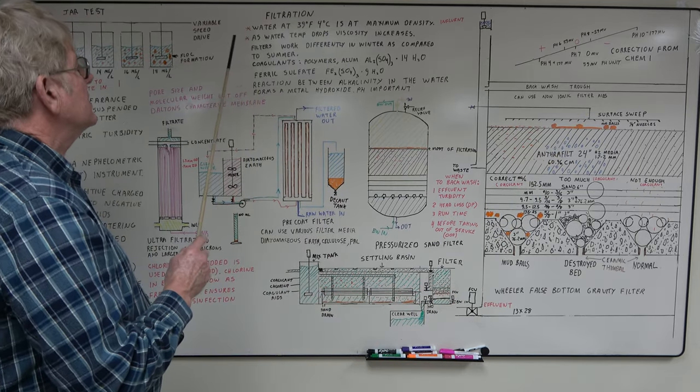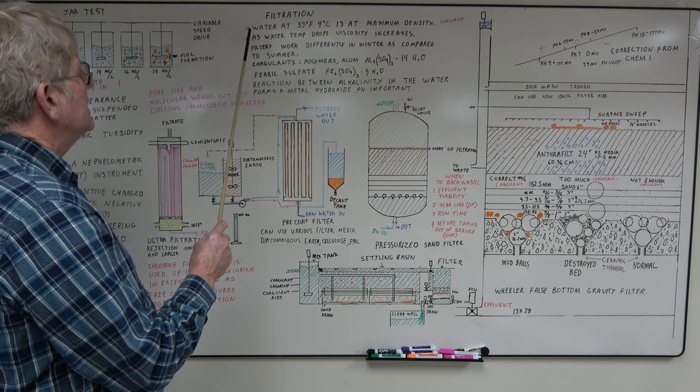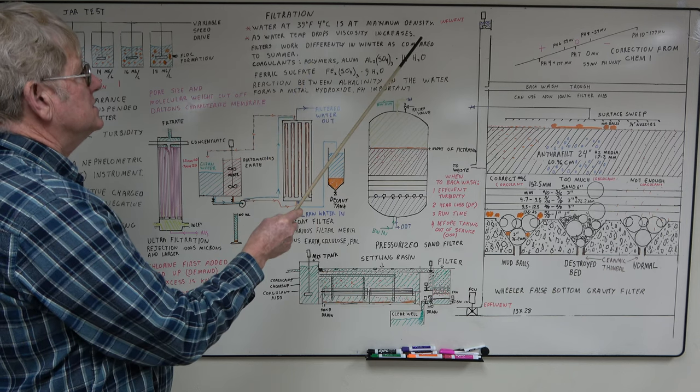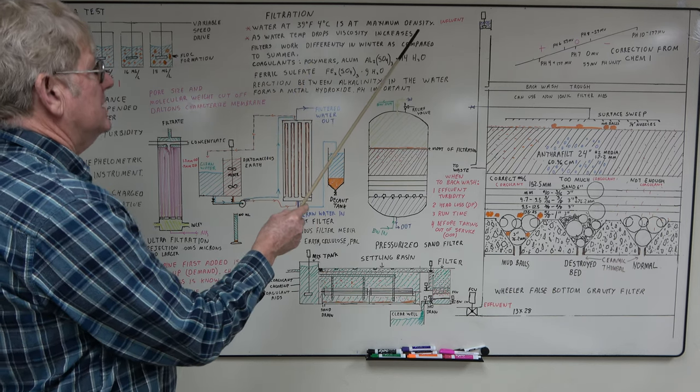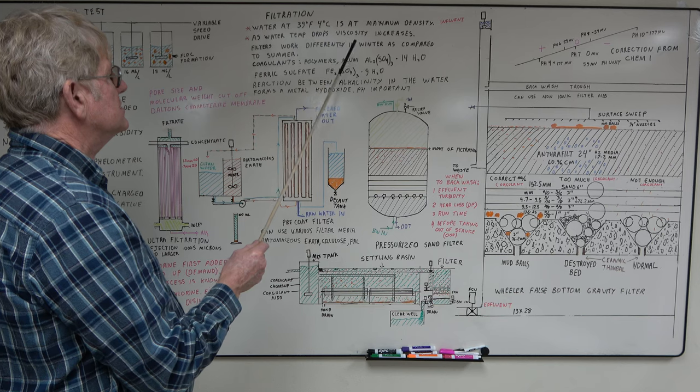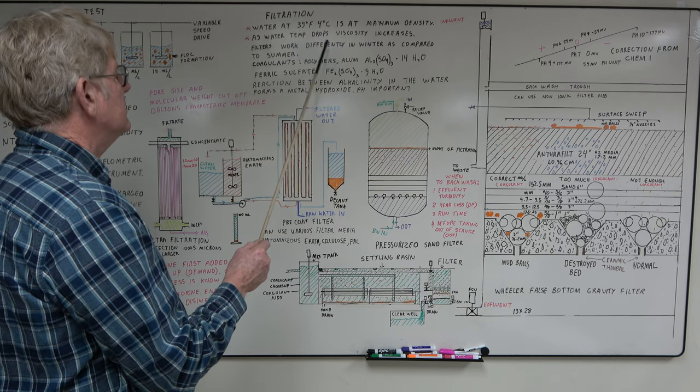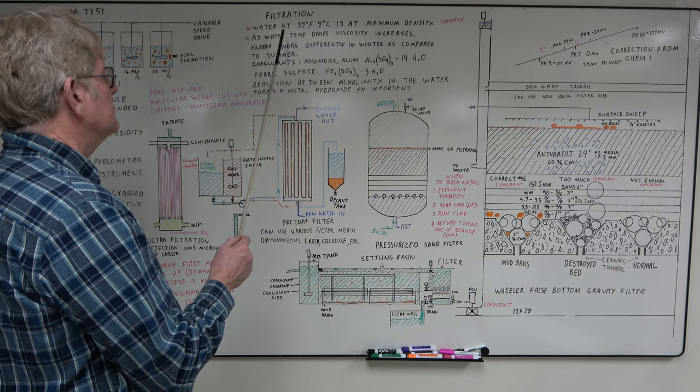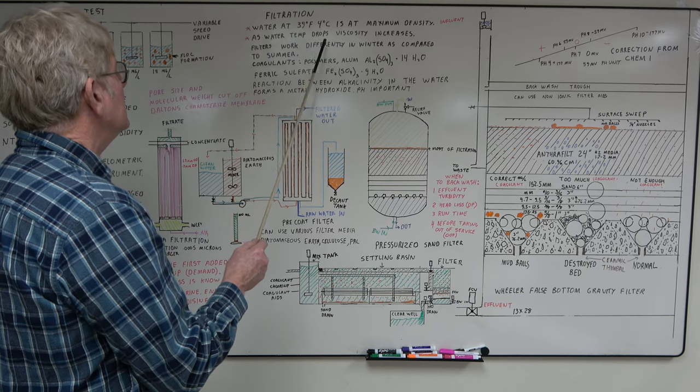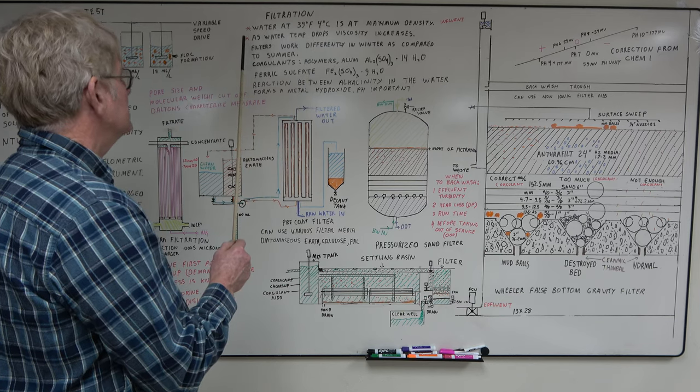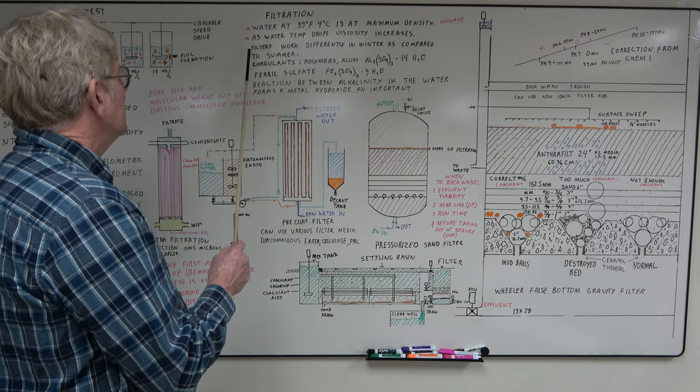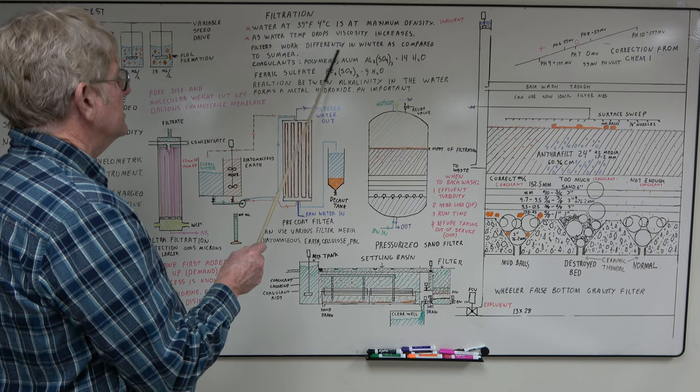Filtration. Big thing with water: at 39 degrees Fahrenheit, 4 degrees Celsius, has maximum density. This means as it gets colder it gets lighter, and as it gets warmer it gets lighter. As water temperature drops, viscosity increases. These are really important for filter operation. Backwash rates will change per filter based on your temperature of the water. Basically, with filtration we're trying to remove all the suspended solids, any particulate in the water. Basically filters work differently in the winter as compared to the summer.